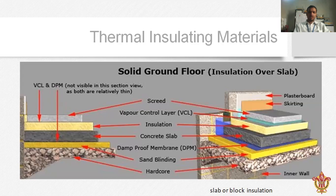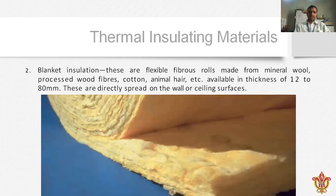This diagram shows a solid ground floor for insulation over a slab with different layers. The second type is blanket insulation. These are flexible fibrous rolls made from mineral wool, fiber, cotton, animal hair, etc. The thickness generally available is 12 to 80 mm. These are applied directly onto wall and ceiling surfaces.